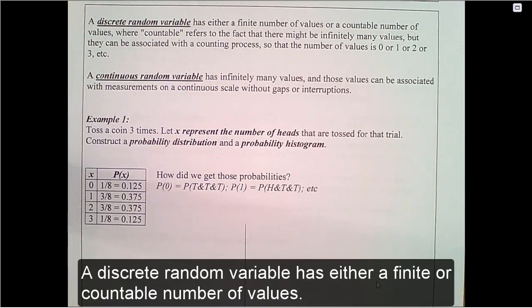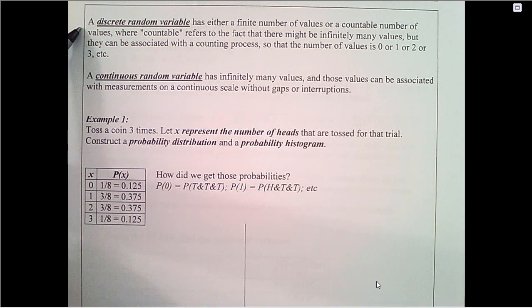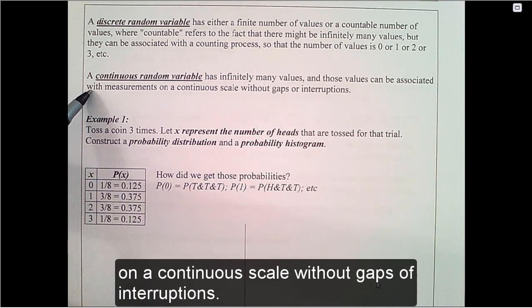A discrete random variable has either a finite countable number of values. A continuous random variable has infinitely many values, and those values can be associated with measurements on a continuous scale without gaps of interruptions.